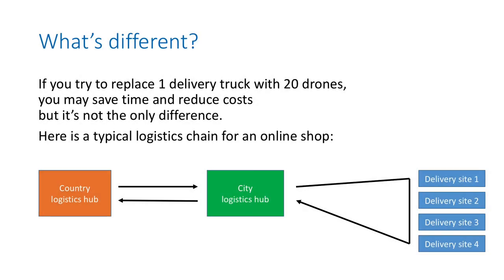So we saw why we need autonomous drones. Now let's focus on what is different when you have autonomous drones, using the usage model for last mile logistics. Let's say you try to replace one truck with 20 drones. On the left you have a logistics hub talking to a local logistics hub, and trucks go and deliver packages to several sites and come back.